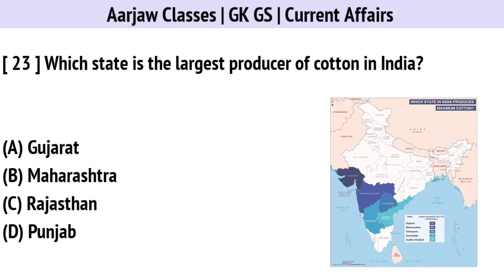Which state is the largest producer of cotton in India? The correct option is A — Gujarat.